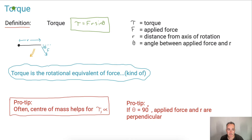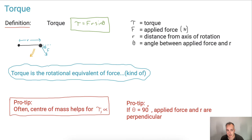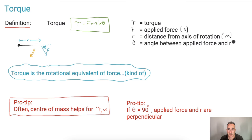Let's discuss what these different concepts are. First, F is the applied force — it doesn't have to be straight down, it could be at some angle — and that's in Newtons. R is the distance from the axis of rotation. The torque is going to be larger if you apply the force further out, so R is in meters. And theta is the angle between the applied force and R — that'll be in degrees.